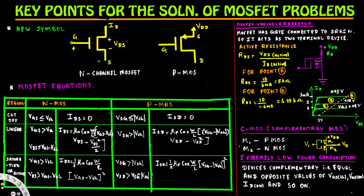Before we solve problems on MOSFETs, let's look at the key information we need. Here we have the new symbol for the N-channel MOSFET — this is the gate, this is the drain, and this is the source. And if you look at the P-MOSFET, this is gate, source, and drain.